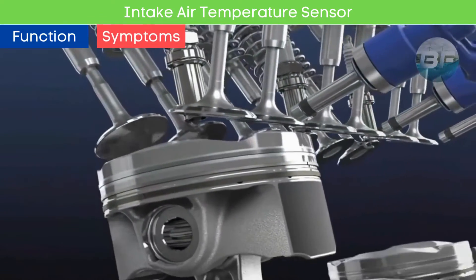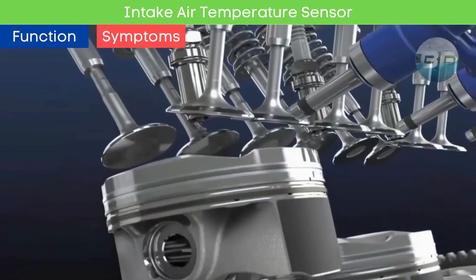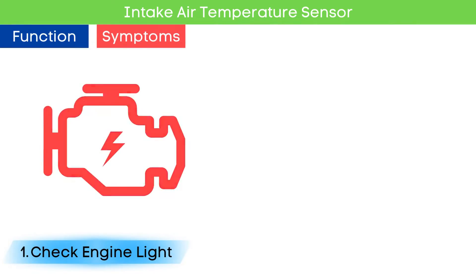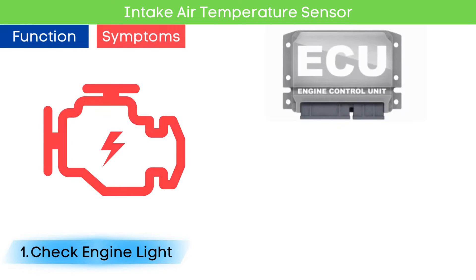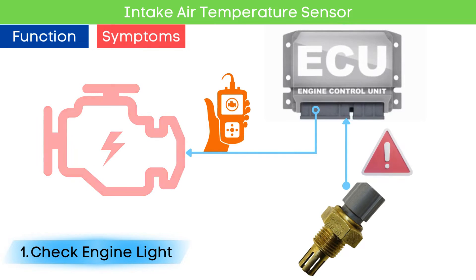Now that we know what the IAT sensor does, let's dive into the symptoms of a bad IAT sensor. Symptom number one: check engine light comes on. While a check engine light can indicate various problems, a malfunctioning IAT sensor is a frequent trigger. This happens because the ECU detects issues related to the IAT sensor and triggers relevant fault codes. Later in this video, we will discuss OBD-II codes related to a faulty IAT sensor.